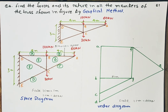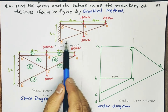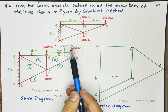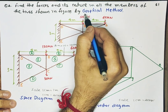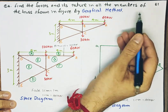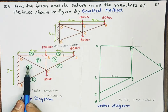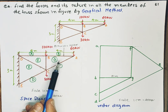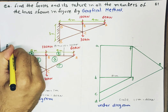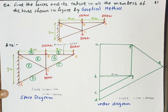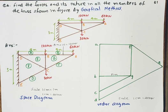Hello friends. In lecture number 9, we will be solving the same truss which we solved in the previous lecture, but that was by the method of joints. Here it is by graphical method. That means we are going to find out the magnitude and nature of forces in each and every member of this truss.